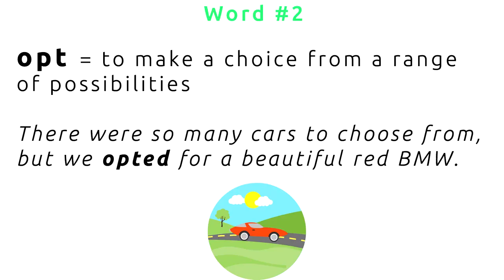Word number two is opt, which means to make a choice from a range of possibilities. For example, there were so many cars to choose from, but we opted for a beautiful red BMW. To opt basically means to choose from a range of possibilities. So in this example, the person had many, many cars to choose from, but he opted for a red BMW.